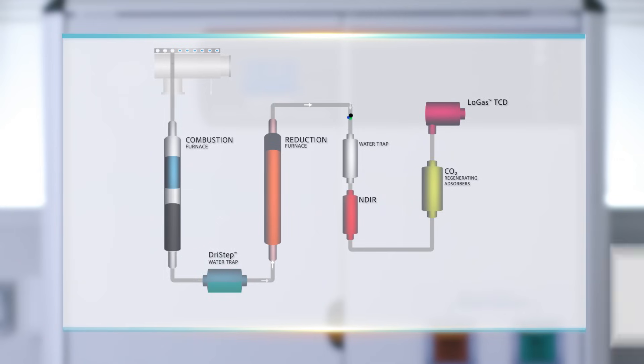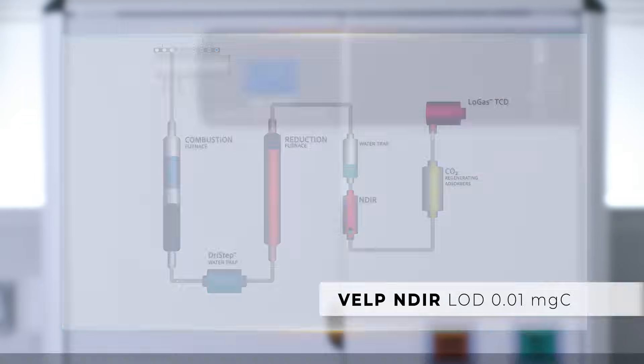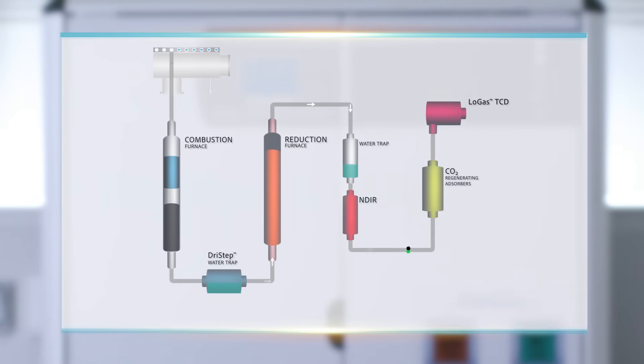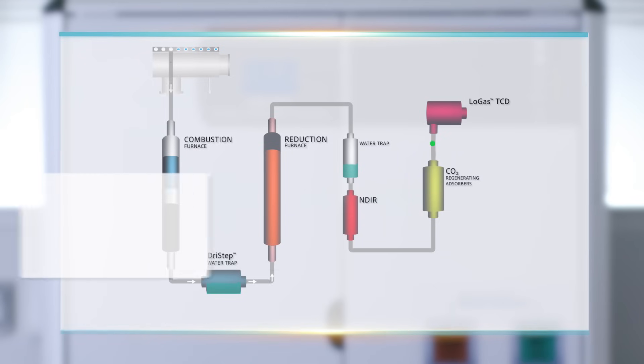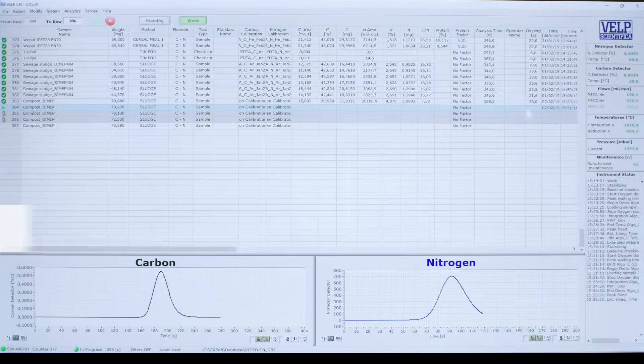The VELP NDIR detector precisely detects carbon concentration with an excellent limit of detection. The auto-regenerative CO2 absorbers trap carbon dioxide in order for the exclusive thermal conductivity detector to detect the nitrogen content.